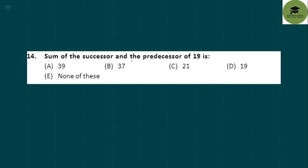The sum of the successor and predecessor of 19: the successor of 19 is 19 + 1 = 20, and the predecessor of 19 is 19 − 1 = 18. Their sum is 38. Since 38 is not in the options, option E — none of these — is your correct answer.